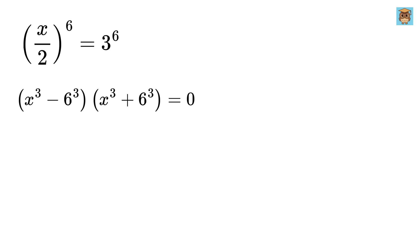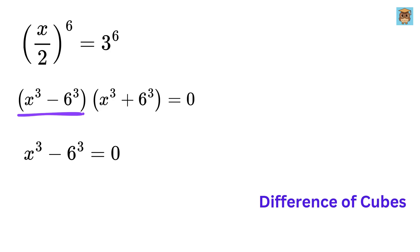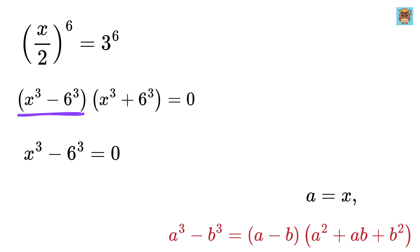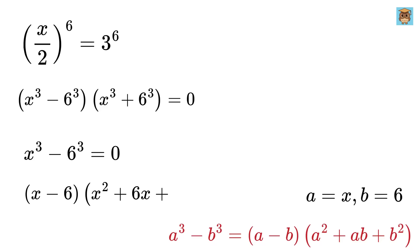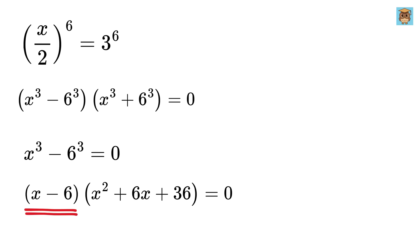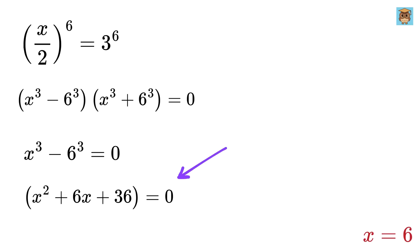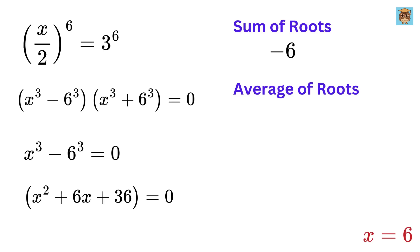At this point we have factored the original equation into two simpler expressions, so we solve each one separately. First, x cubed minus 6 cubed — this is a difference of cubes. The difference of cubes states that a cubed minus b cubed equals a minus b multiplied by a squared plus ab plus b squared. Setting a as x and b as 6, we rewrite it as x minus 6, multiplied by x squared plus 6x plus 36, equals 0. The first term x minus 6 gives the solution x equals 6. For solving the quadratic, the sum of the roots equals minus 6, and therefore the average of the roots equals minus 6 over 2, or minus 3.